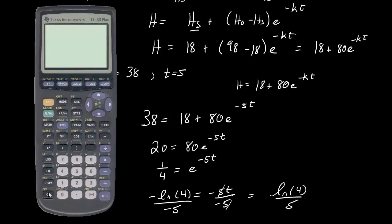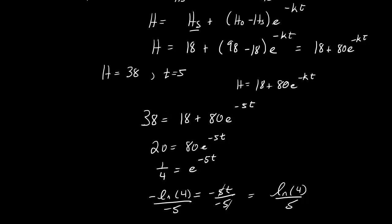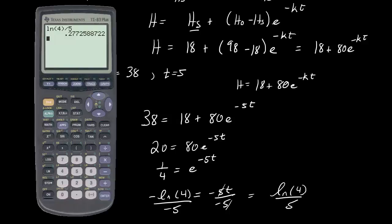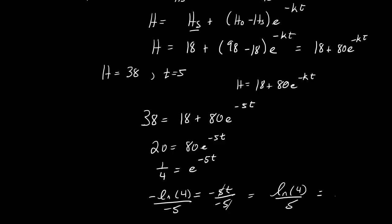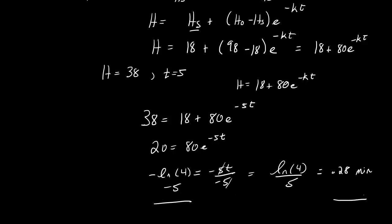Taking out the calculator, we get the natural log of 4 divided by 5, which gives approximately 0.28. That seems small — it looks like it rapidly cooled pretty fast. So k is approximately 0.28, and that took us about 0.28 minutes — about 20 seconds — to find. So our equation becomes H equals 18 plus 80 times e to the negative 0.28t.